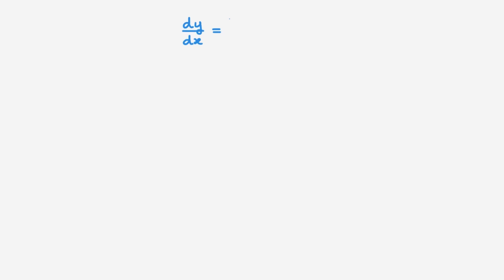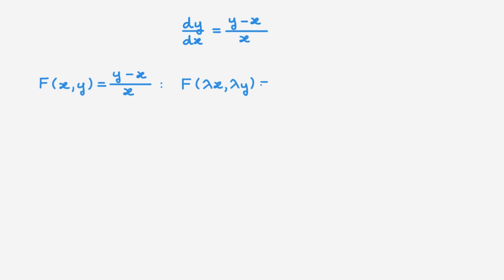Let's look at an example: dy/dx = (y − x)/x. First, we need to check that this is indeed a homogeneous equation. We identify the function f(x,y) = (y − x)/x. Next, we evaluate f(λx, λy) to get (λy − λx)/(λx). We can cancel lambda in the numerator with lambda in the denominator, and we end up with (y − x)/x, which is our original function f. This means f is a homogeneous function of degree zero, so we are indeed dealing with a homogeneous equation.